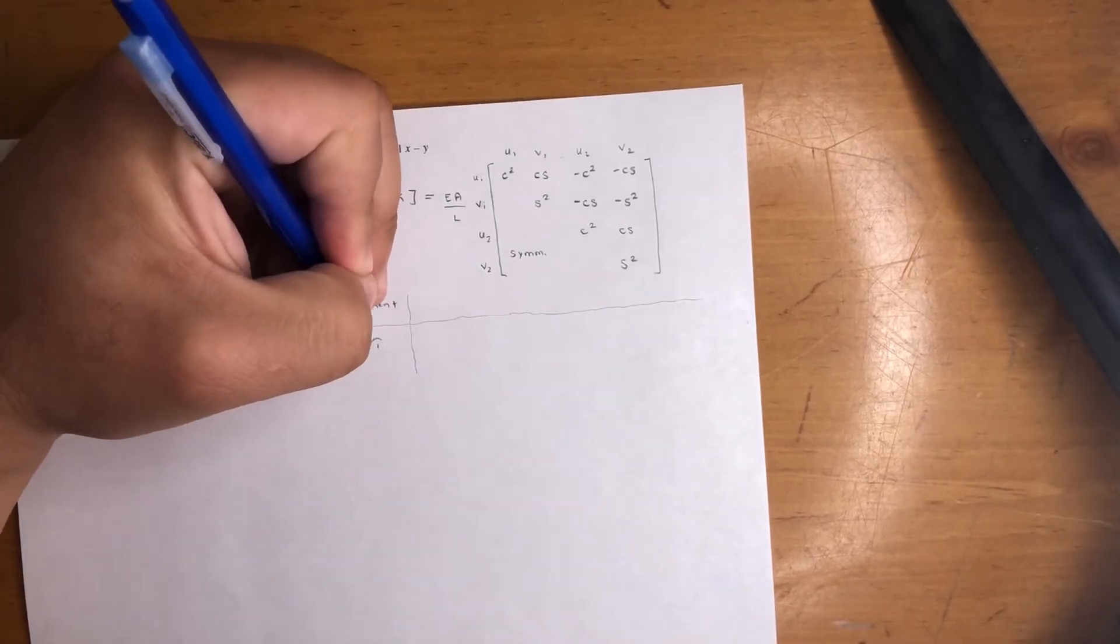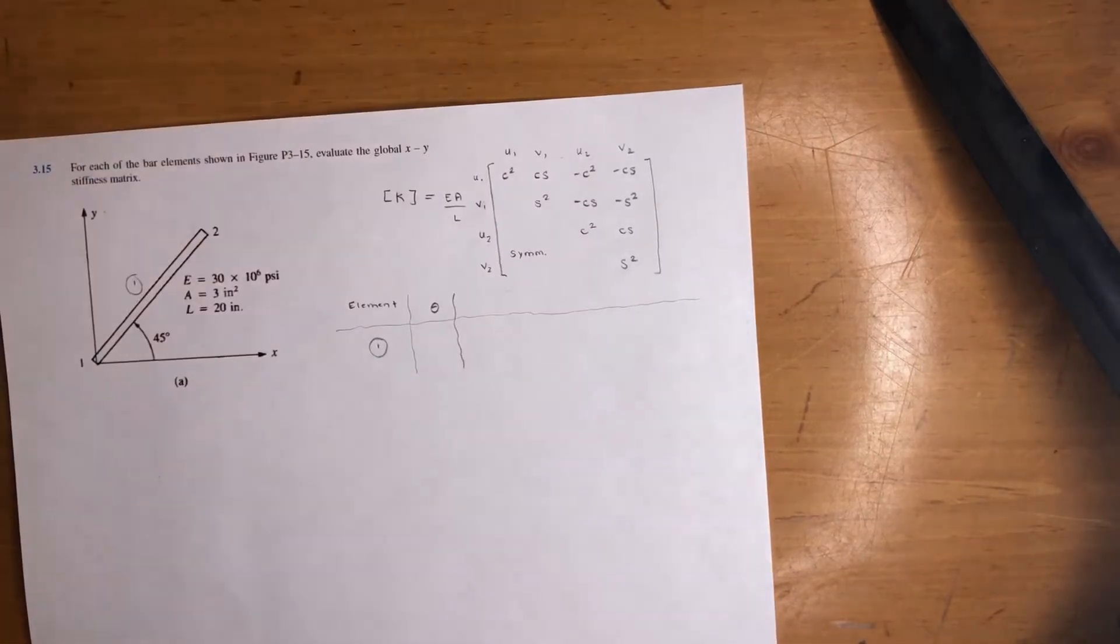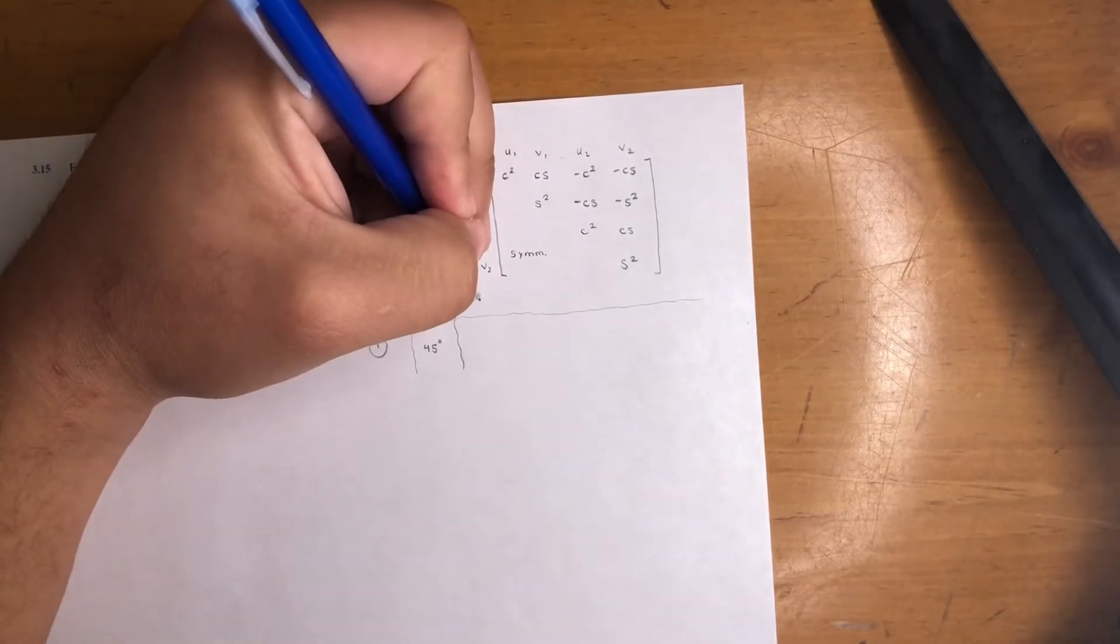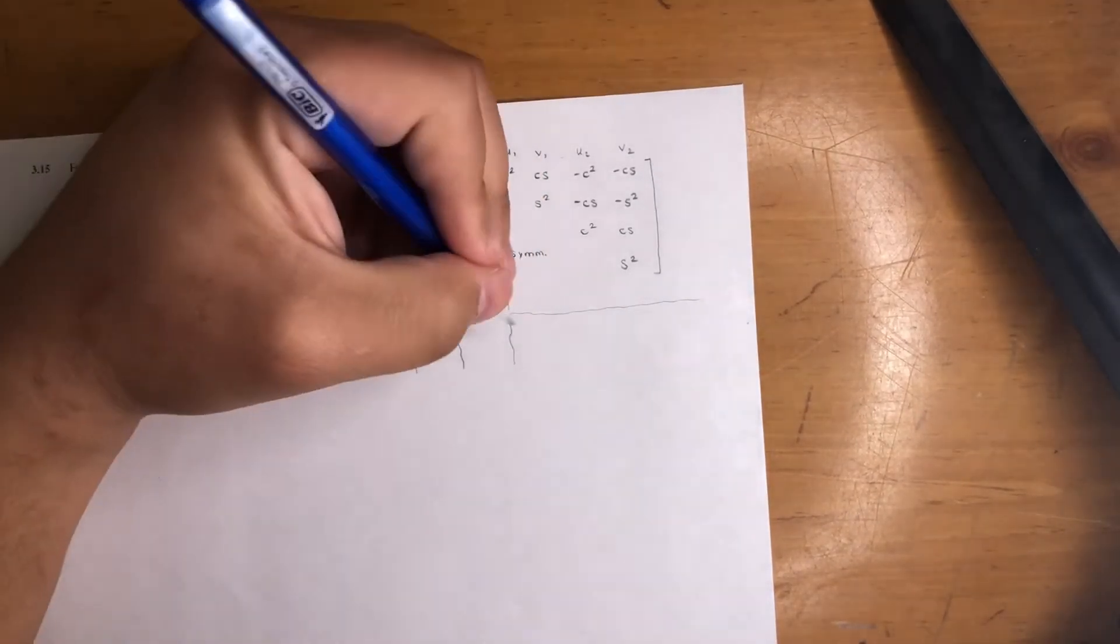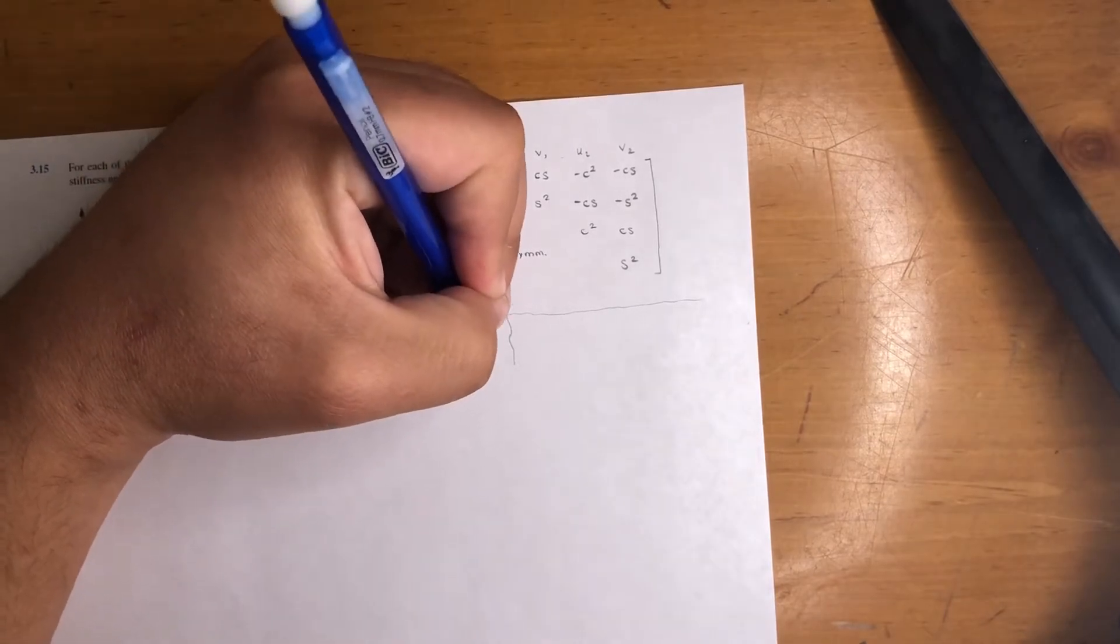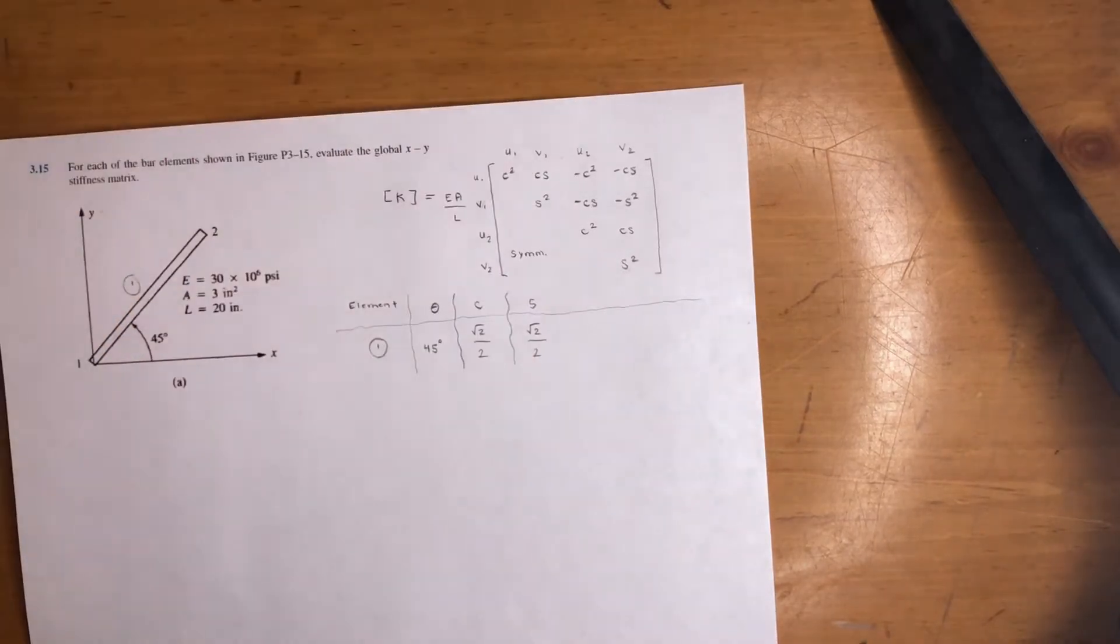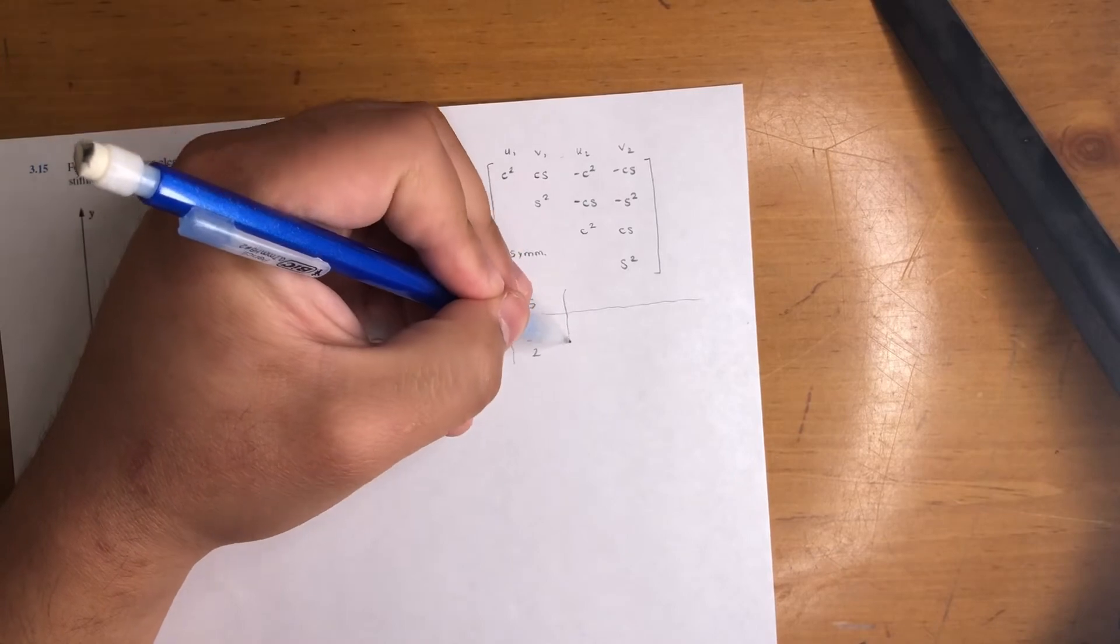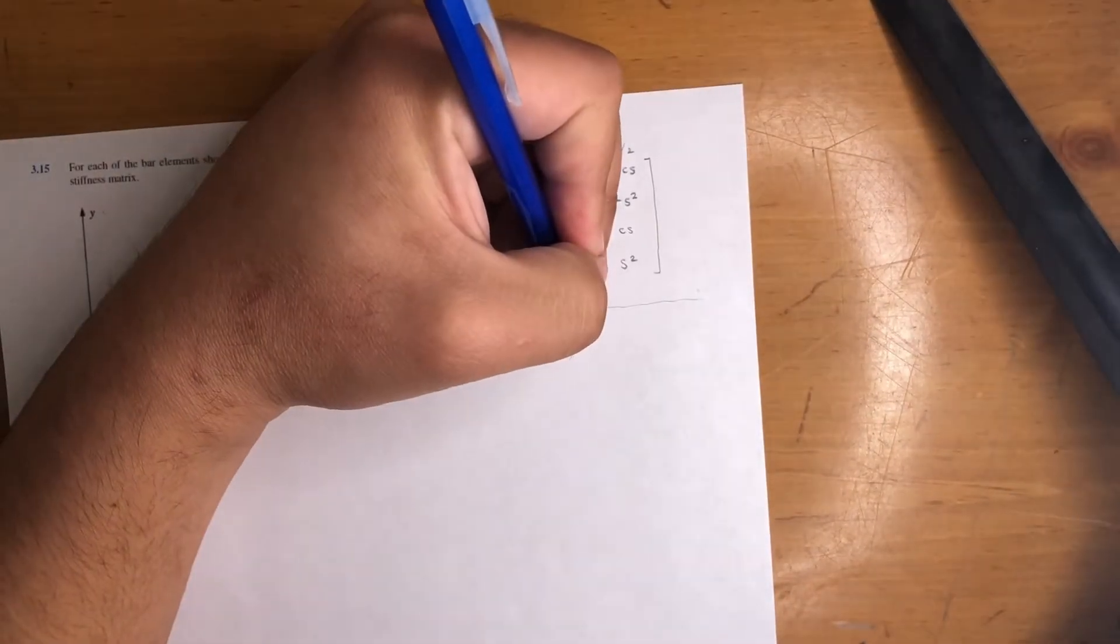The theta of that element, which is 45 degrees. Then the cosine of that element, that's going to be radical two over two. The sine of that element is also radical two over two—just take sine and cosine of theta.